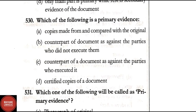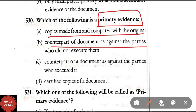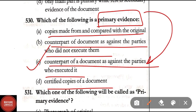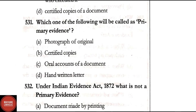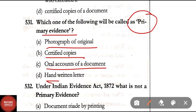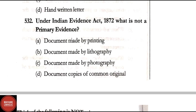Question 530: Which of the following is primary evidence? Option A: copies made from and compared with the original; Option B: counterpart of documents as against the parties who did not execute them; Option C: counterpart of a document against the parties who executed it; Option D: certified copies. Correct answer is Option C. Question 531: Which one of the following is called primary evidence — photograph of original, certified copies, oral accounts of the document, or handwritten letter? Option D is the right answer — handwritten letter is primary evidence.